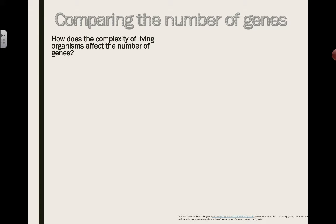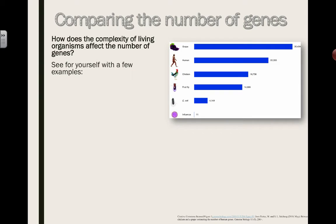One question we can ask is: out of all the living things that are out there, how does the complexity of living organisms affect the number of genes, or is there any type of relationship? Looking at a simple diagram, humans have around 22,000 genes, chicken 16,000, fruit flies 14,000, E. coli 4,000, influenza virus has 11 different genes, and a grape 30,000 genes.